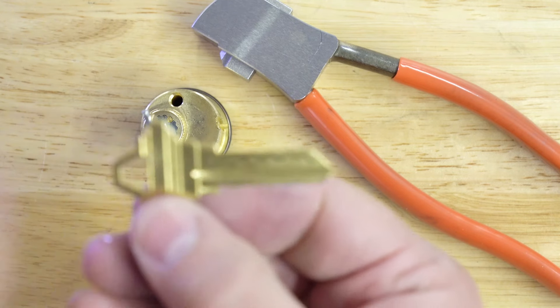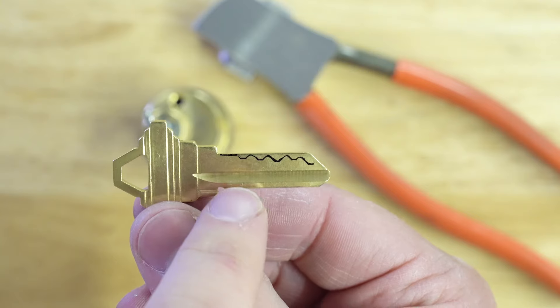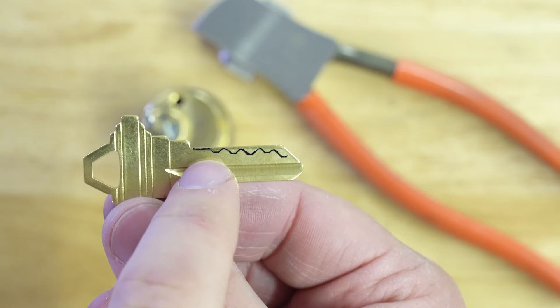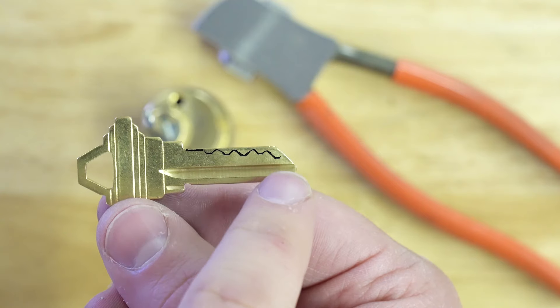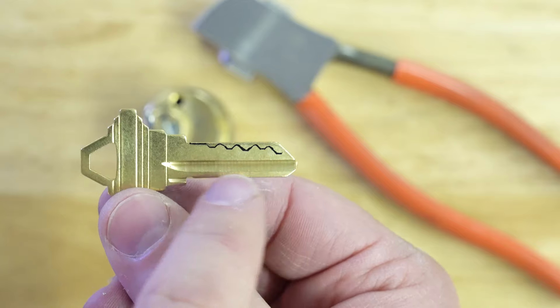After you trace the key, this is what it's going to look like. Let me focus it there so you can see all the different cuts here. All you're really concerned about is the root, the base of each one of these different depths. This last one here, we're missing a little bit at the end but we have everything we need to cut the key.